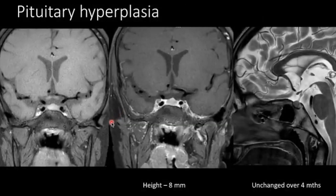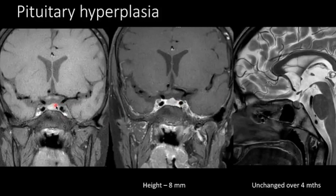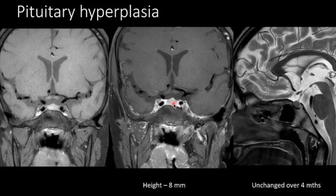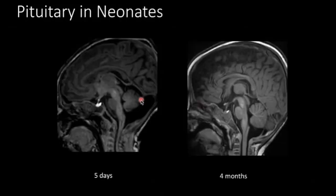Here we have a seven-year-old girl with early puberty and hypercortisolism. MRI was performed to rule out a sellar mass. We saw a superiorly convex border of the adenohypophysis and increased height — measured at 8 mm, which is above normal for age seven. On follow-up it was unchanged and suspected to be a pituitary adenoma, but this was actually pituitary hyperplasia. Another variant is hyperintensity of the adenohypophysis in neonates — seen in a five-day-old infant — which resolves over time.